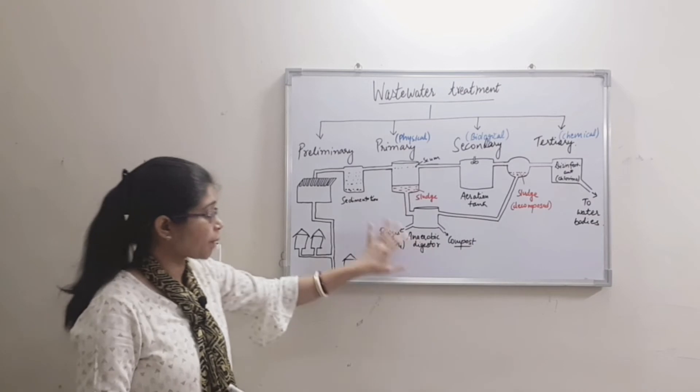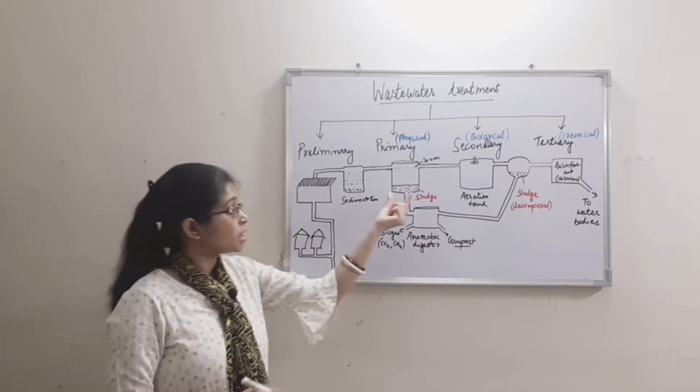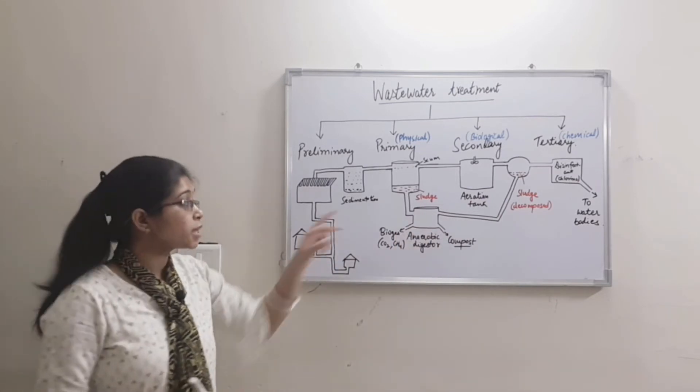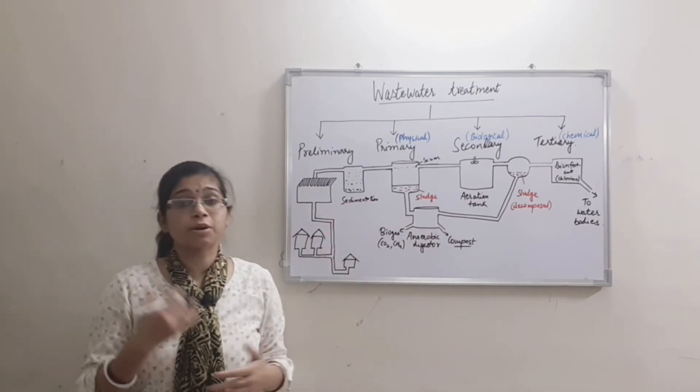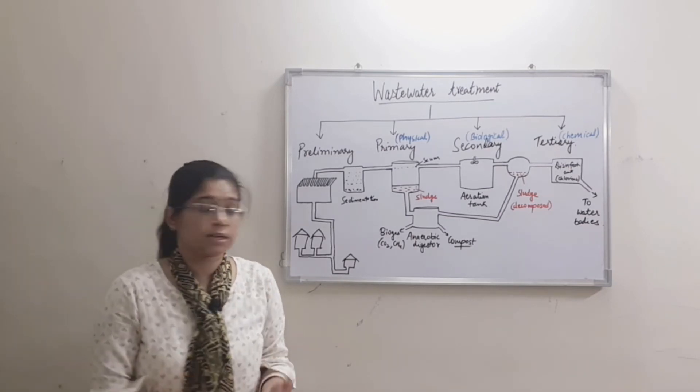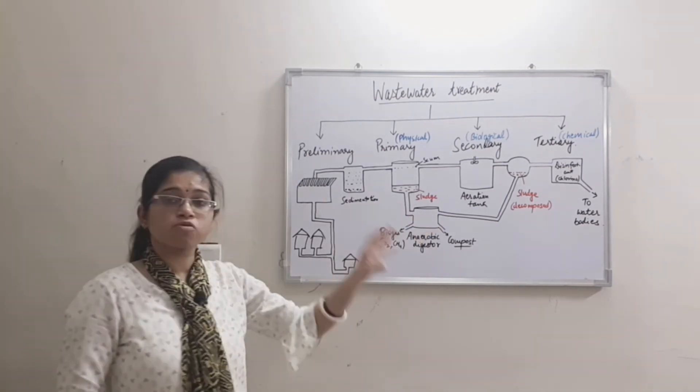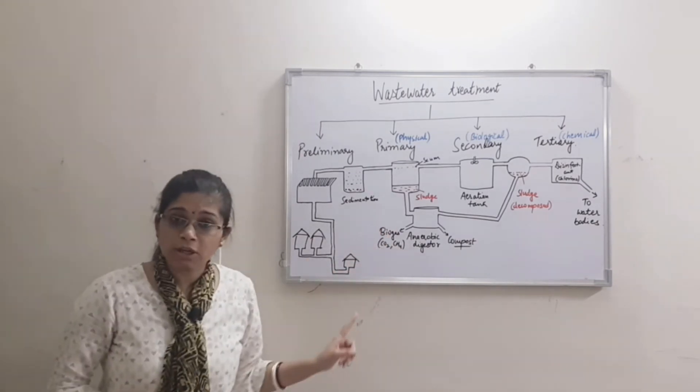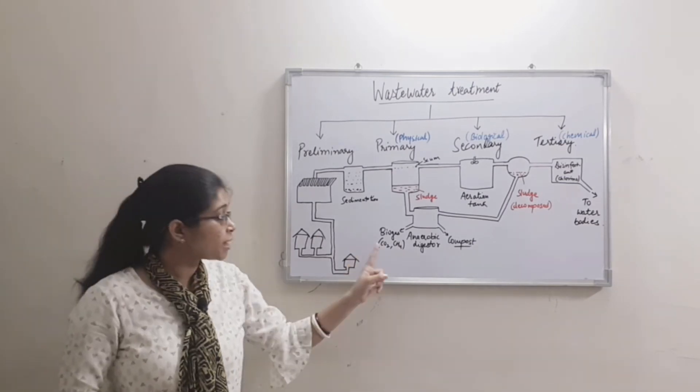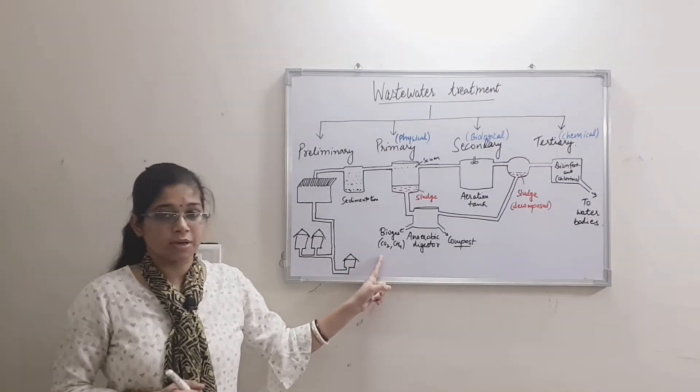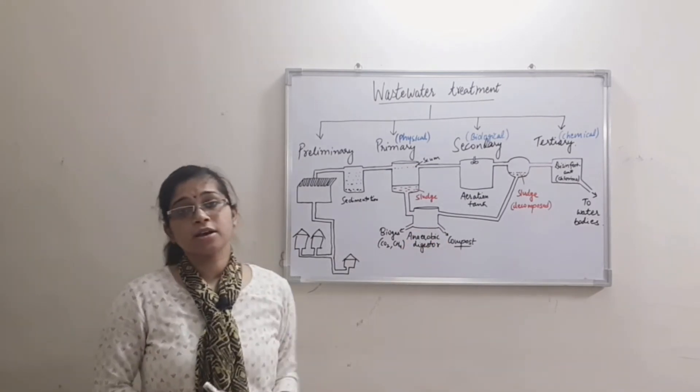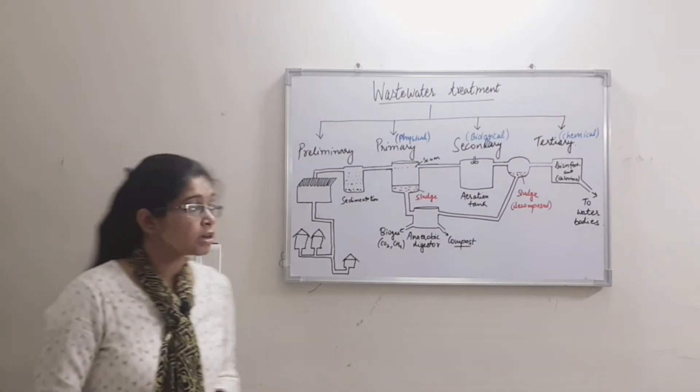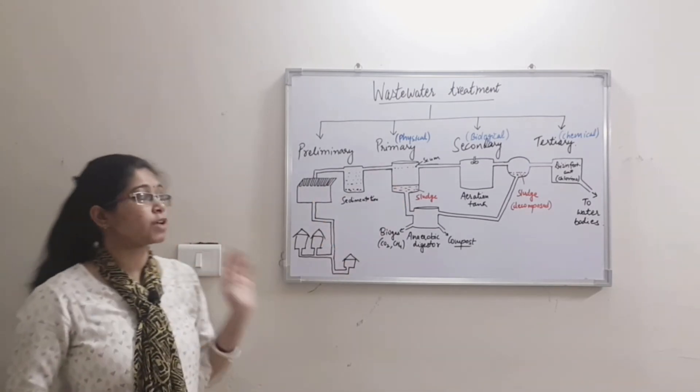Now, the sludge from primary and secondary treatment is collected. This sludge has a lot of moisture and water, so we dry it. After drying, it produces biogas which is used as fuel and contains methane. The dried sludge is used as compost, which is very good for plant growth. In this way, we have seen the treatment of waste water.